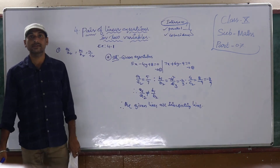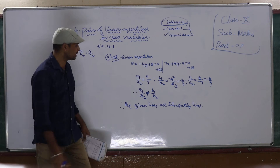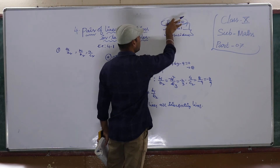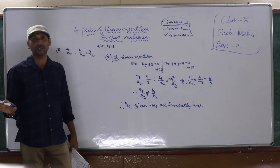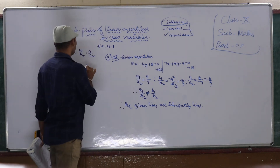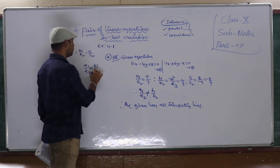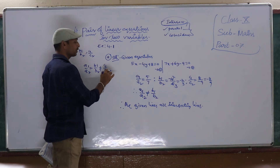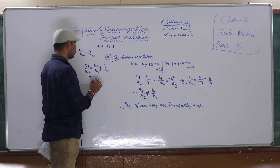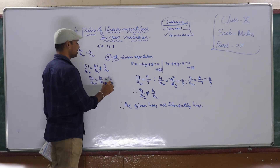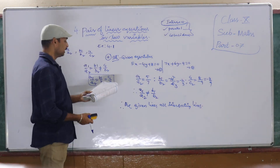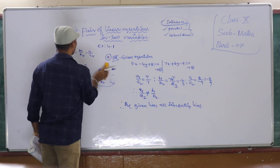For the remaining two problems, you just find the ratios and express which condition is satisfied. To summarize: if A1 by A2 is not equal to B1 by B2 — lines are intersecting. If A1 by A2 equals B1 by B2 but is not equal to C1 by C2 — lines are parallel. If A1 by A2 equals B1 by B2 equals C1 by C2 — lines are coincident. The remaining two problems you do as homework.